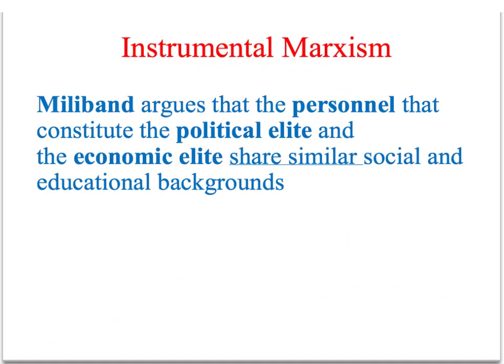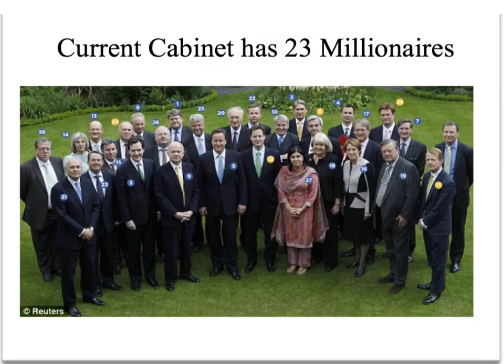Ralph Miliband argued that within Britain this happens for a number of reasons. Firstly, if we look at the background of both the political elites and the economic elites, there's a great deal of overlap. The majority of cabinet ministers are millionaires and a majority have been educated privately at elite public schools. From the instrumental Marxist perspective, this means politicians in key leadership positions are going to identify with the interests of the capitalist class.